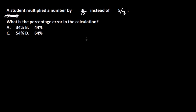Alright guys, let's solve this problem — it's a little different. A student multiplied a number by 3/5 instead of 5/3. What is the percentage error in the calculation? You might wonder what kind of question this is, but it's a tricky one — easy to solve once you understand the process.